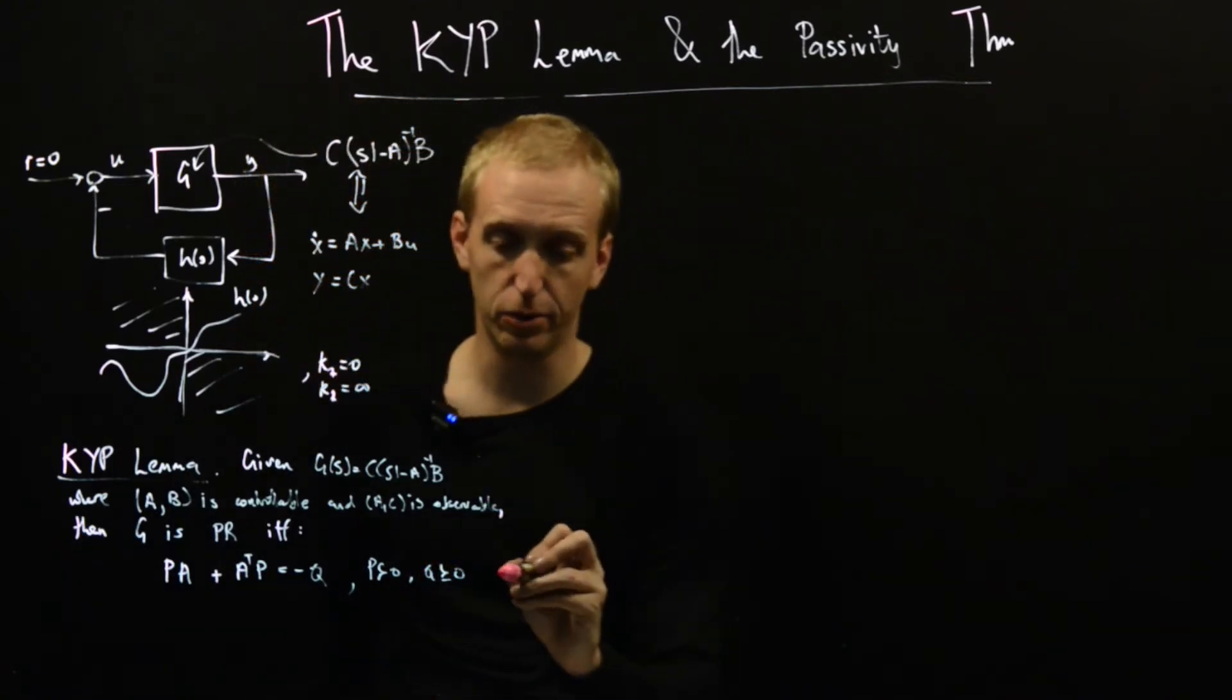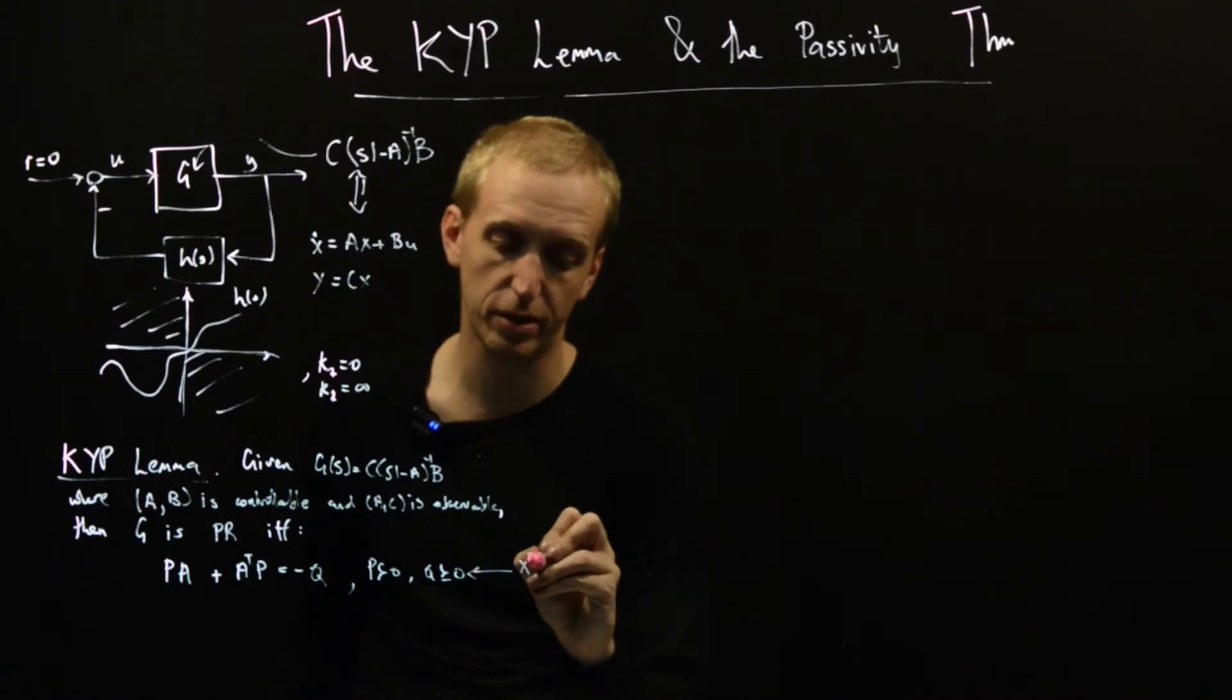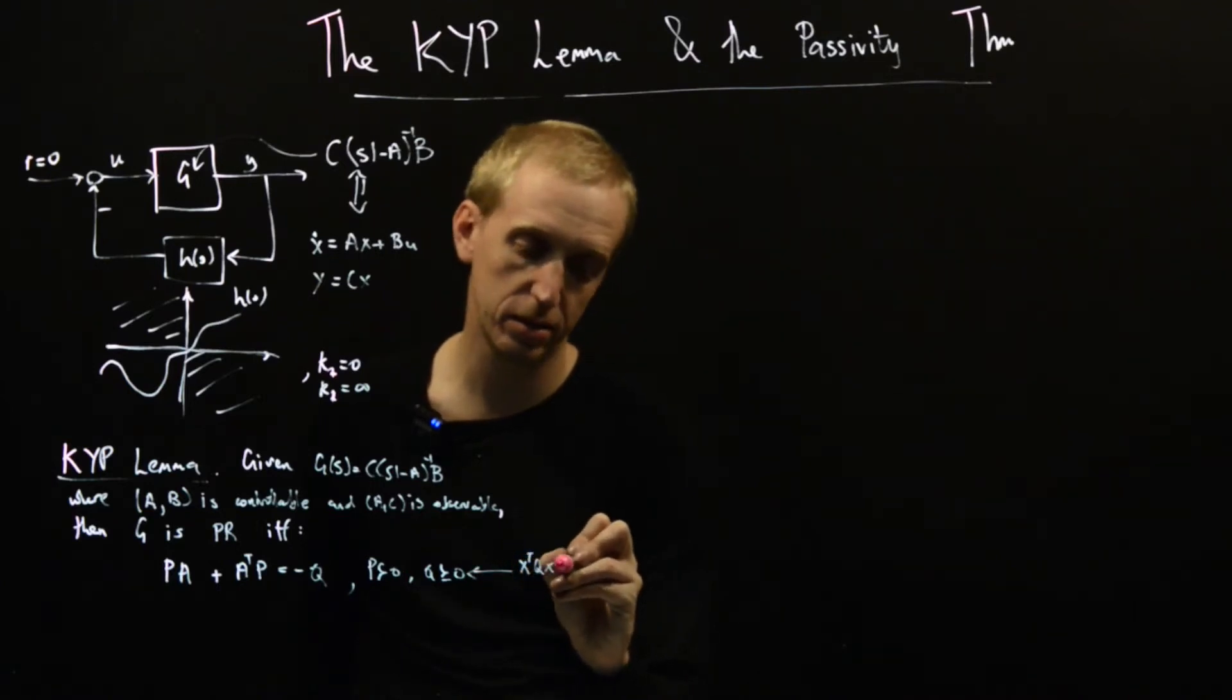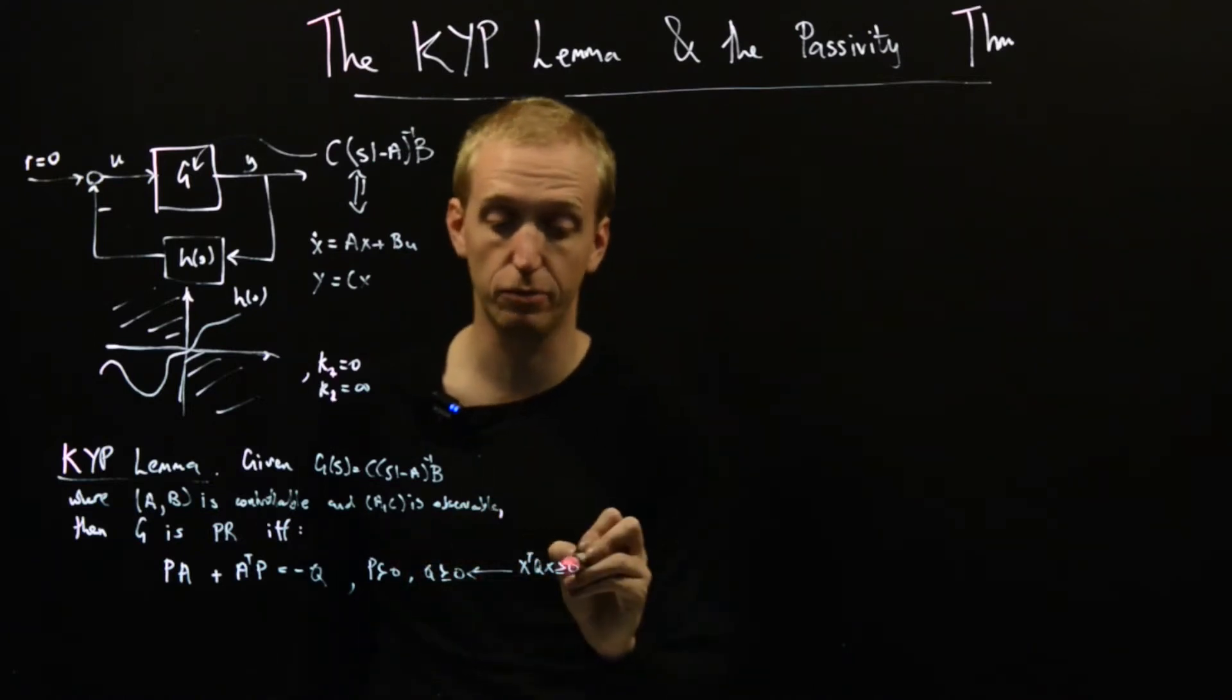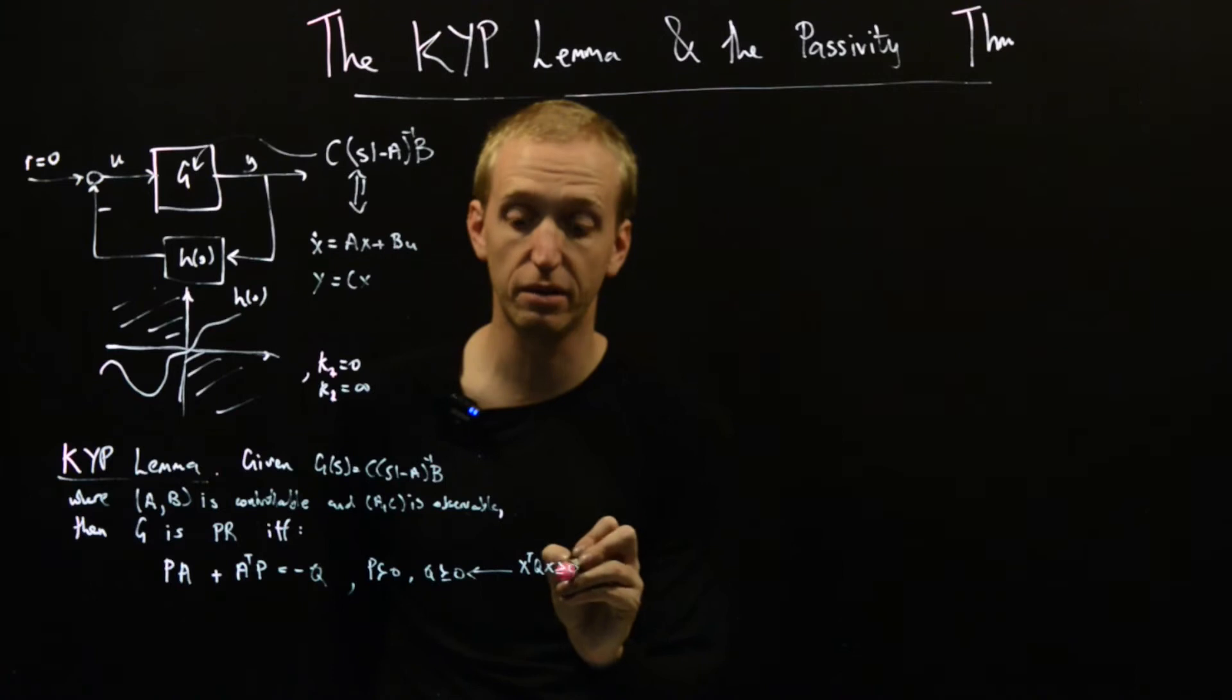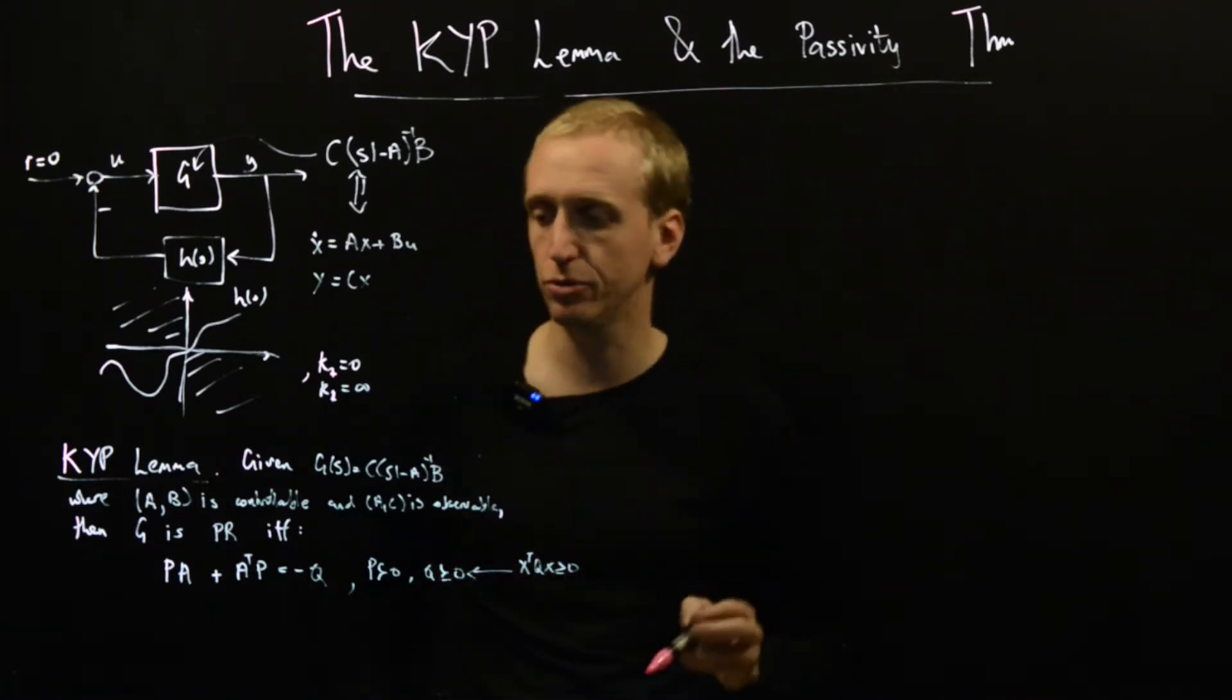The first one of these looks very like the Lyapunov equation from before: P A plus A transpose P equals minus Q. Here P is a positive definite matrix and Q is a positive semi-definite matrix. Semi-definite just means that x transpose Q x is greater than or equal to zero, so positive definite requires this to be strict for all non-zero x. Positive semi-definite just allows a little bit of extra wiggle room.